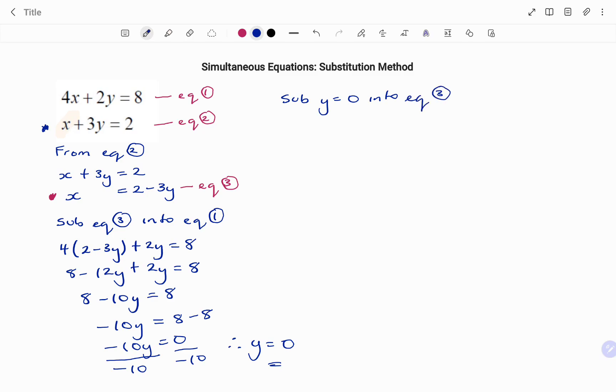Equation 3 states that x equals 2 minus 3y. So, my x now becomes 2 minus 3 multiplying y, which is 0. I have x equals 2 minus 0. Therefore, the value of x will be 2.